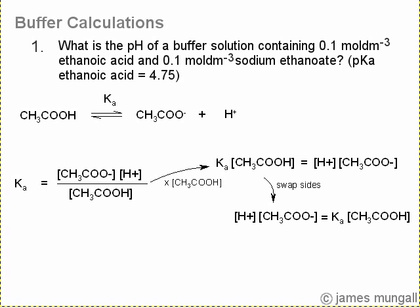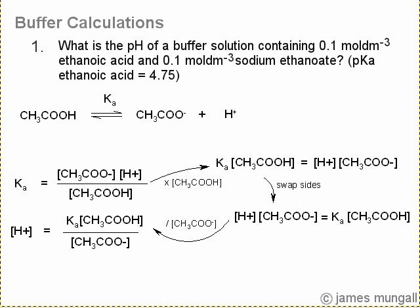Swap the sides around, getting closer to H plus equals H plus, and then multiply by that is equal to Ka times CH3COOH. Divide both sides by the CH3COO minus, and there we are, we've rearranged for H plus. H plus is Ka, and then the acid over the salt.